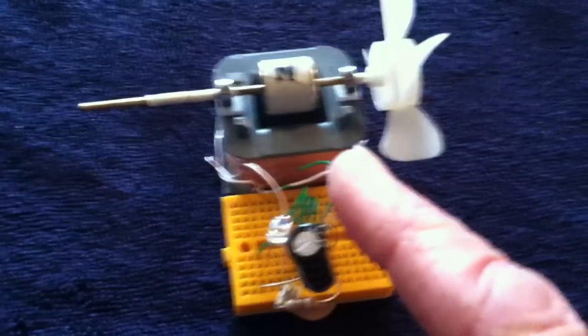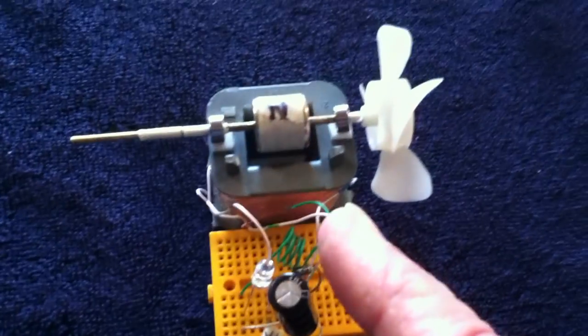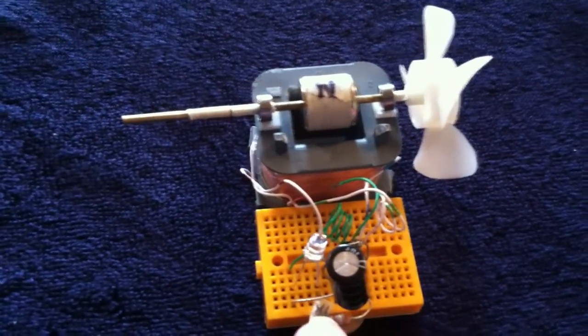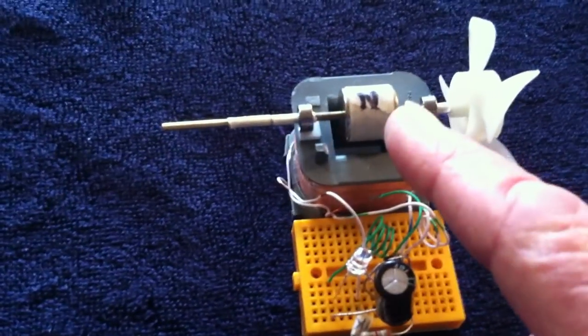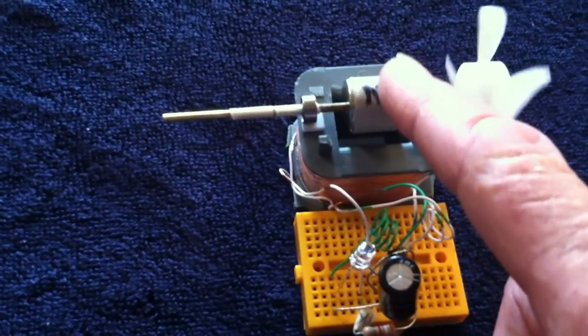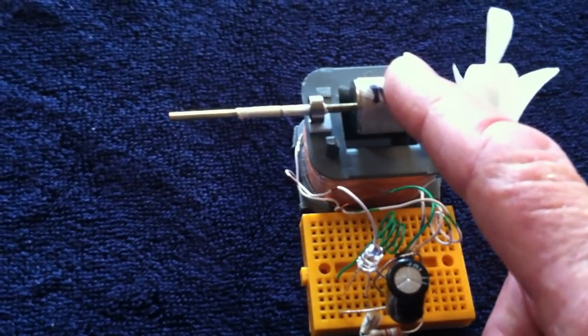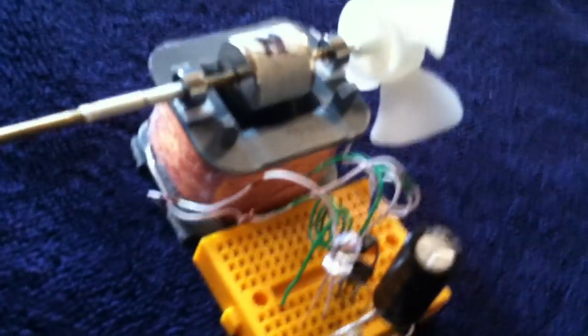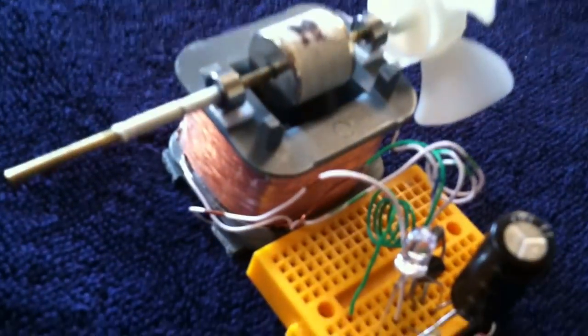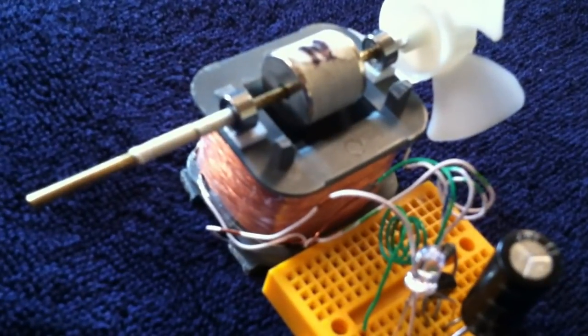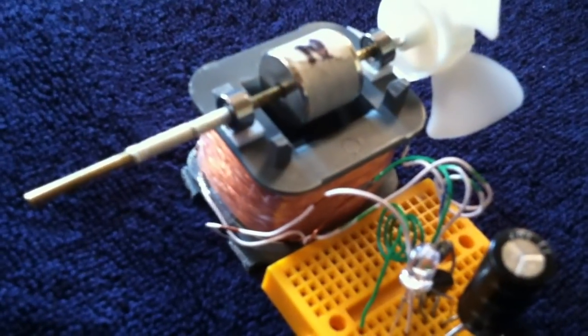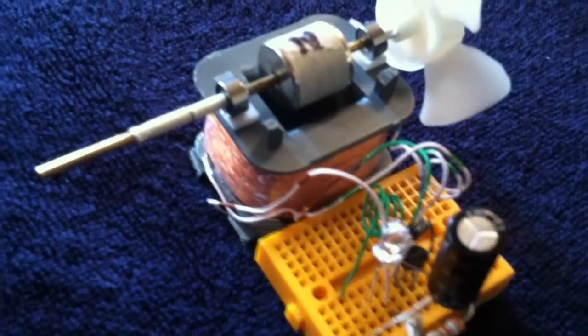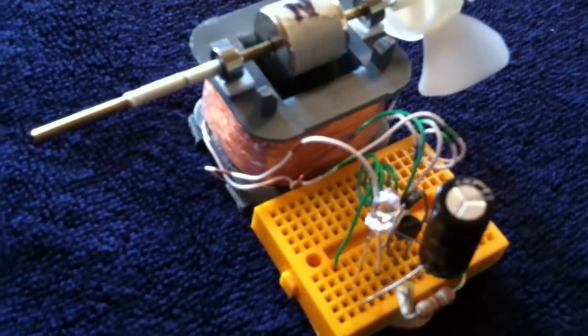This is basically a Bedini SSG circuit, and look it up. It's John Bedini's famous Bedini SSG circuit, but it's not a monopole. It's a north-south rotor with one of these ring magnets, and this is a transformer coil. I got this online, I don't know what it came out of.